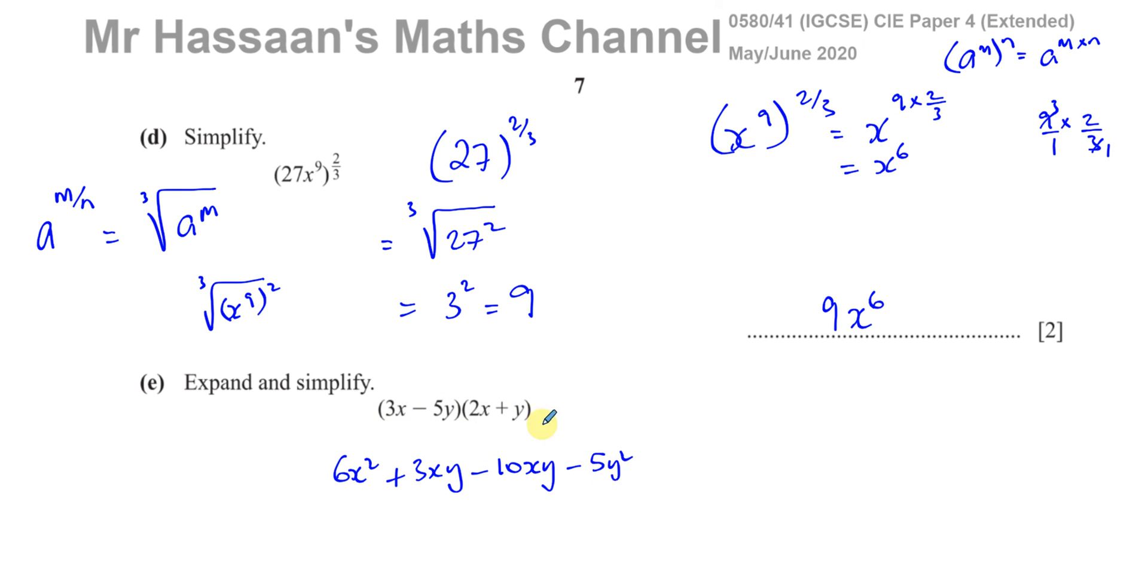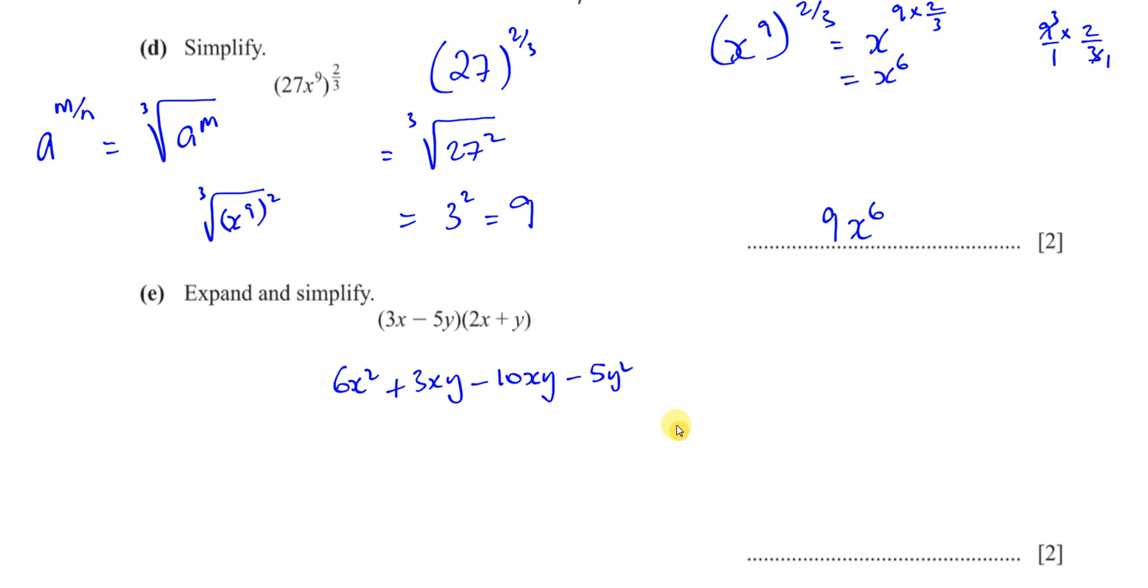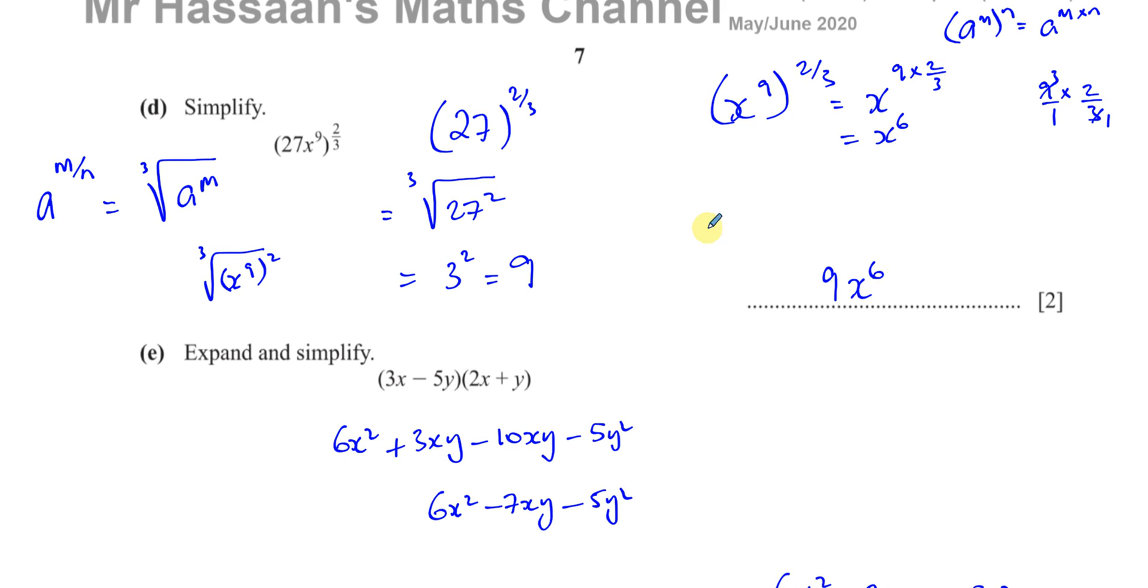Now we're going to combine any like terms that we see here. The like terms are the XYs. So we have 6X squared, 3XY minus 10XY is negative 7XY, minus 5Y squared. And there we have our final answer: 6X squared minus 7XY minus 5Y squared. And that's part E done of this question.